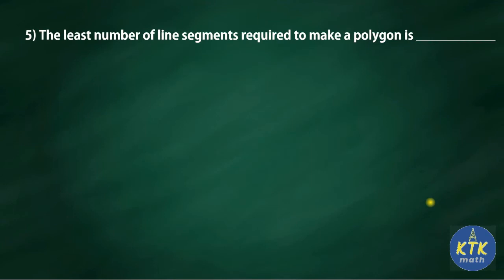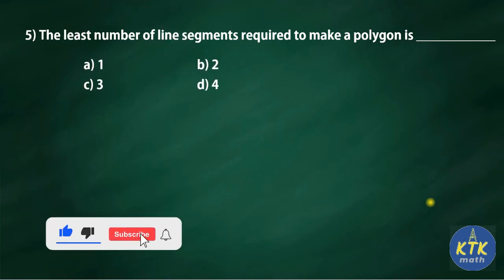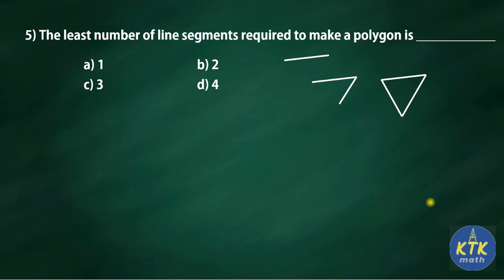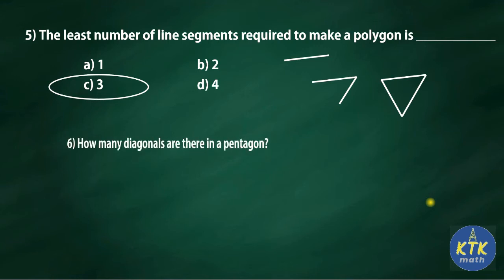Fifth question: the least number of line segments required to make a polygon. Options are one, two, three, or four. A polygon is a closed figure enclosed by line segments. With one line segment — not a polygon. With two — still not closed, not a polygon. Add one more and it becomes a triangle, which is a polygon. So the minimum is three line segments. Answer: option C, three.